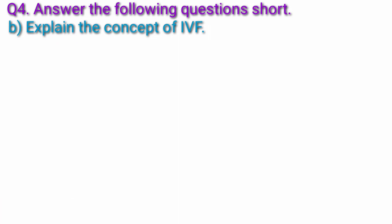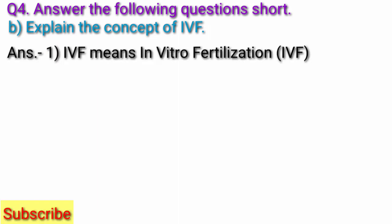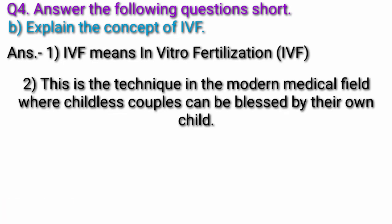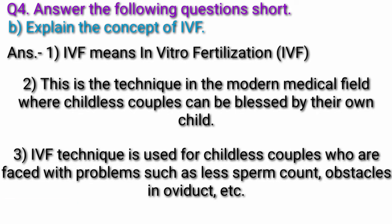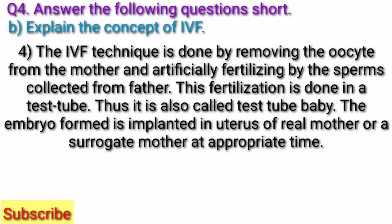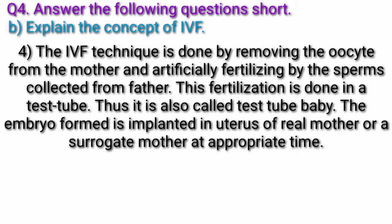Question B: Explain the concept of IVF. Answer: IVF means In Vitro Fertilization. This technique in the modern medical field allows childless couples to be blessed with their own child. IVF is used for childless couples facing problems such as less sperm count or obstacles in the oviduct. The IVF technique is done by removing the oocyte from the mother and artificially fertilizing it with sperms collected from the father — this fertilization is done in a test tube, so it is also called test tube baby. The embryo formed is implanted in the uterus of the real mother or a surrogate mother at the appropriate time.